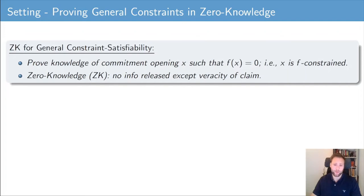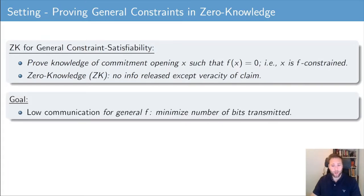Let me introduce the setting of this work: general constraint zero knowledge. Our goal is to construct a protocol for proving knowledge of a commitment opening x such that f of x equals zero for some arbitrary constraint function f. We want to do this in zero knowledge, so the protocol execution should not reveal any additional information besides the veracity of the claim. In general, our goal is to minimize the communication complexity of these protocols.